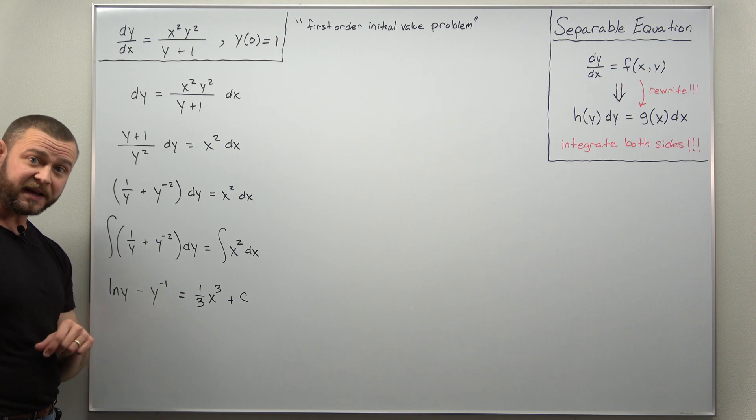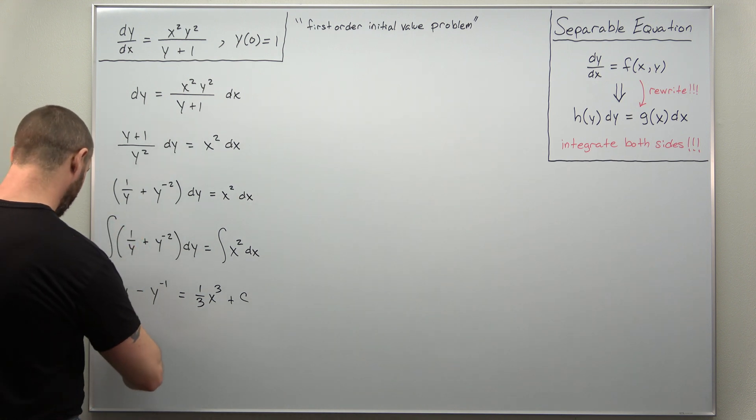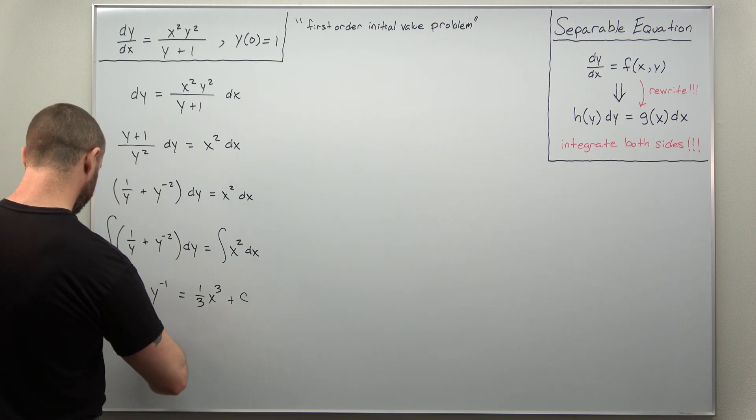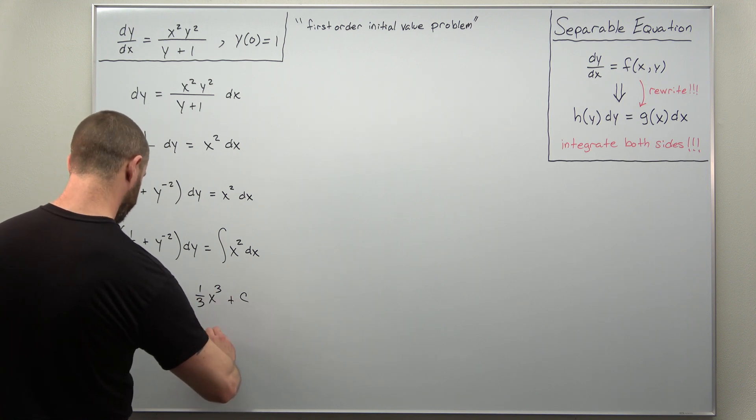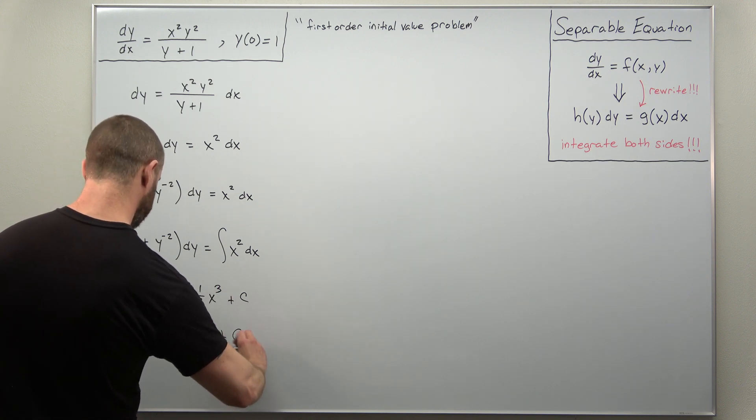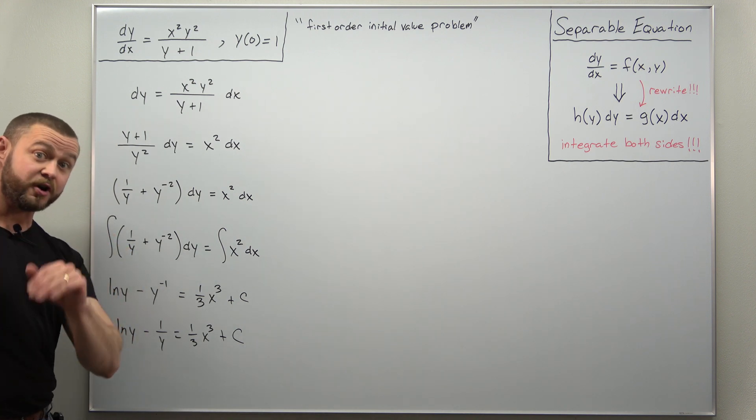All right. And that is basically it. I can clean that up and write that as one over y if I want to, to write our left side as natural log of y minus one over y. And then the right side will remain the same. One third x cubed plus c. And that is basically your solution.